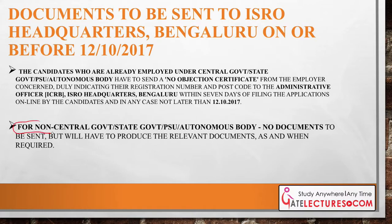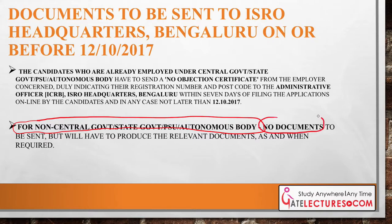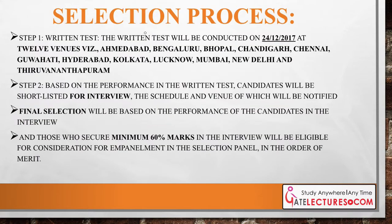Regarding documents: if you are a non-government employee, there are no physical documents that need to be sent initially — you have to produce them only when asked. However, candidates already working in government organizations must obtain a No Objection Certificate from their department and send it to ISRO. All details are given on the ISRO website.